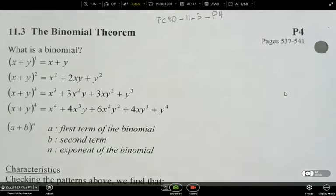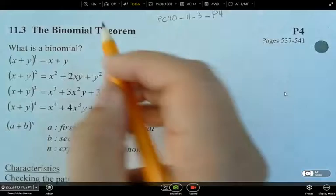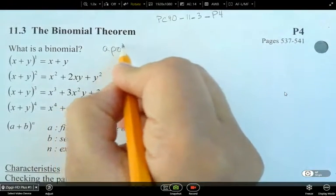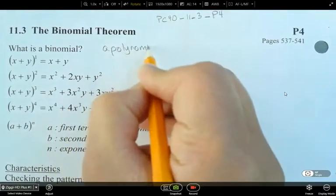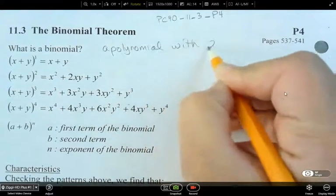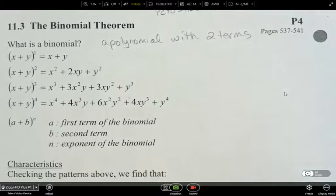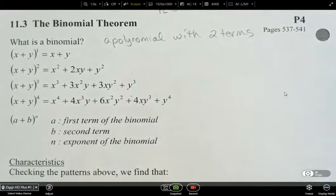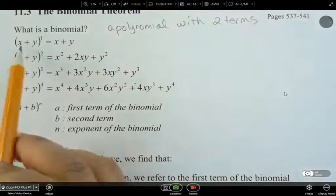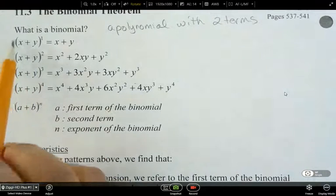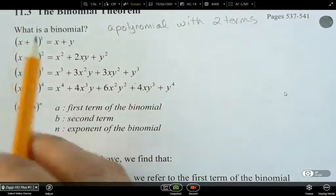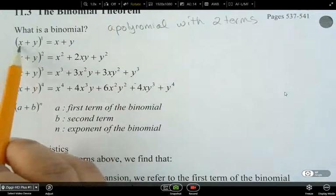So what is a binomial? A binomial is a polynomial with two terms, okay? A polynomial with two terms. Okay, so this is the binomial theorem. And what we're looking at is, so these guys here, they're written as binomials. So a polynomial with two terms.